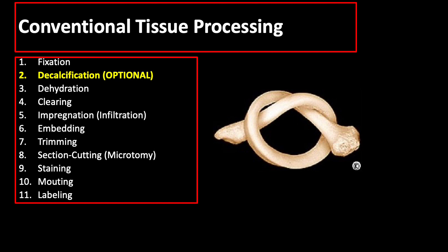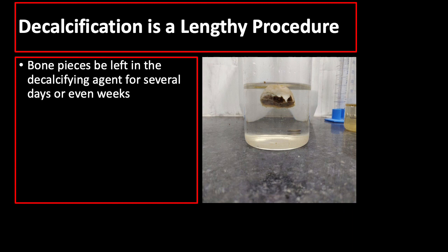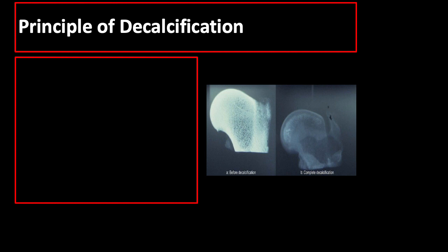This is the step-by-step process of conventional tissue processing. Take note that decalcification is an optional step that follows after fixation. Decalcification enables the histotechnologist to cut soft tissues of the bone using the microtome so that they can be processed like any other soft tissue of the body. Decalcification is quite a lengthy procedure since bone pieces need to be left in the decalcifying agent for several days or even weeks depending on the size of the tissue.